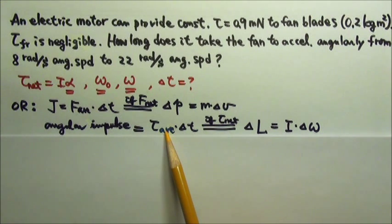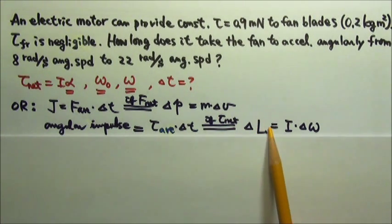If the net torque is not zero, then the angular momentum would not be conserved, because delta L would not be zero.